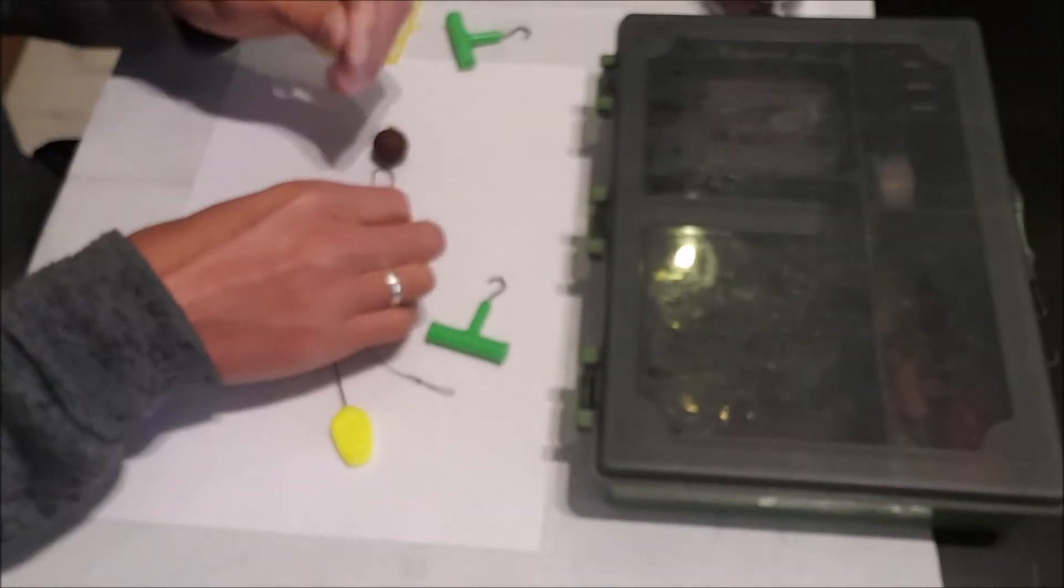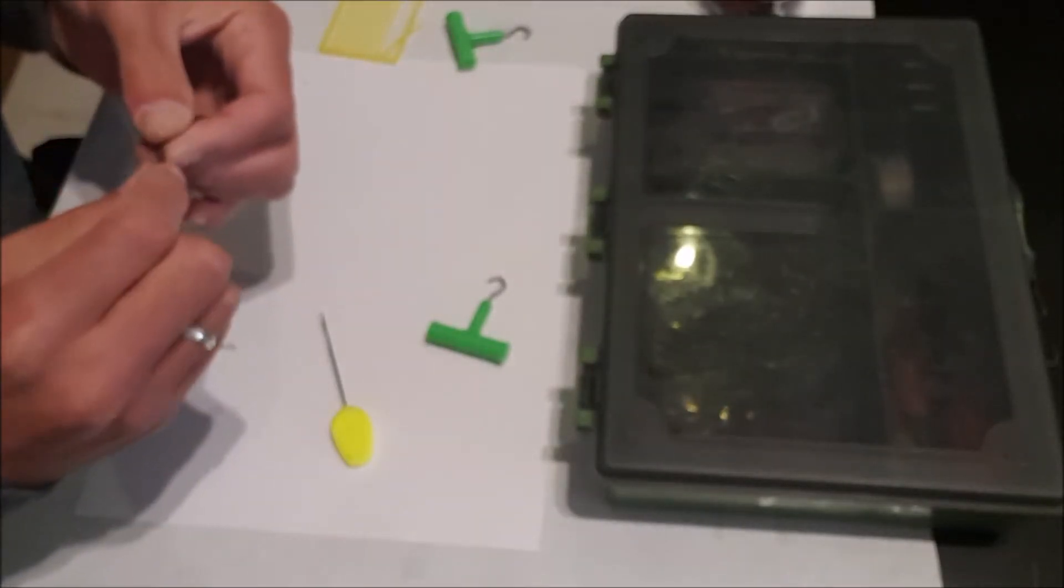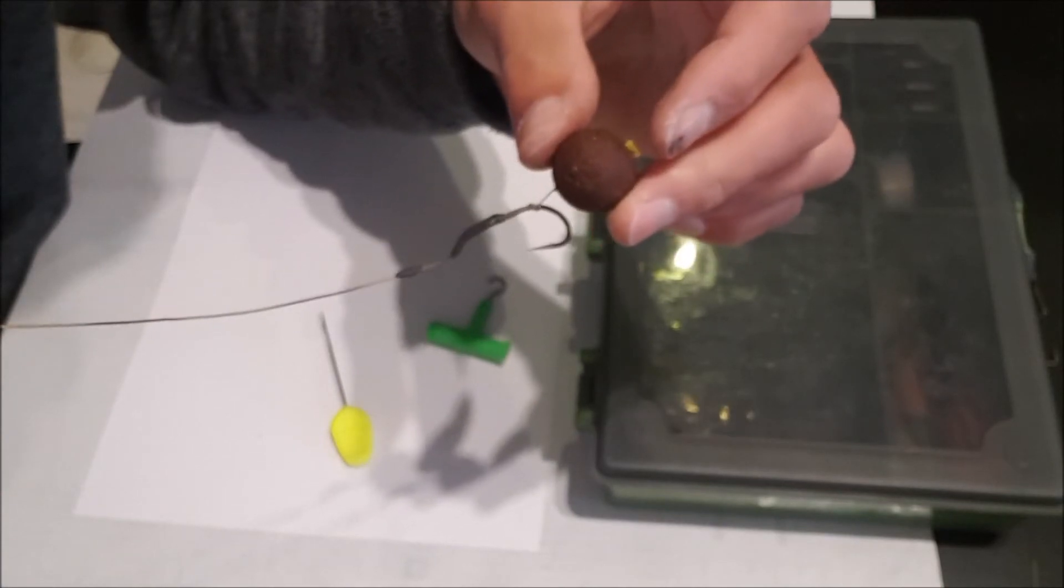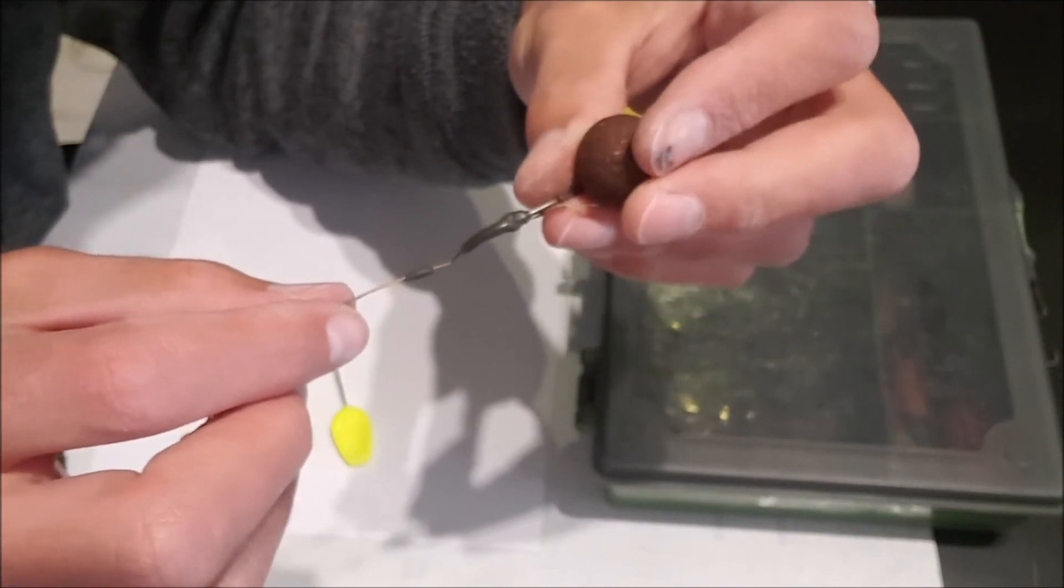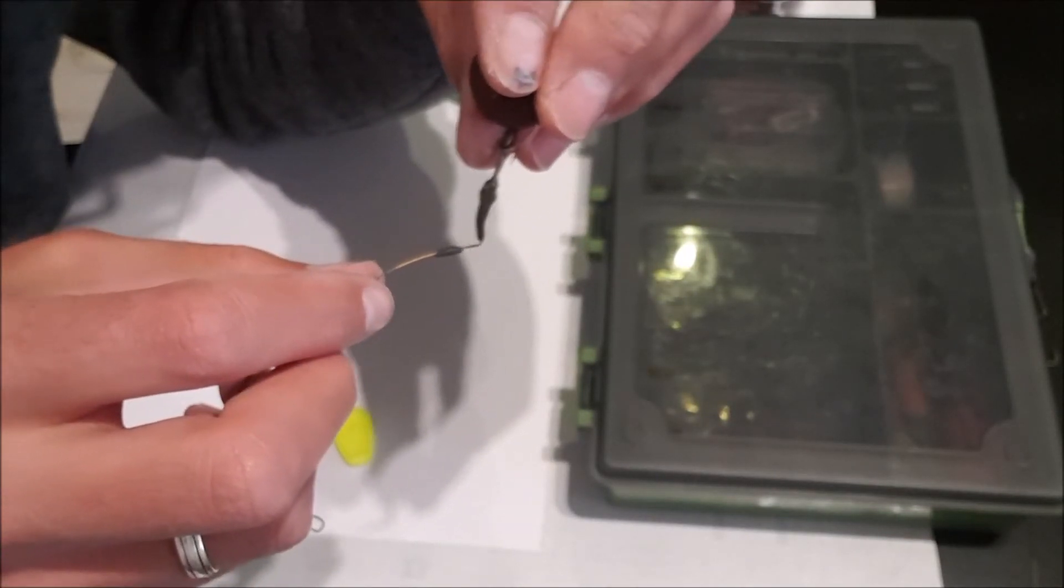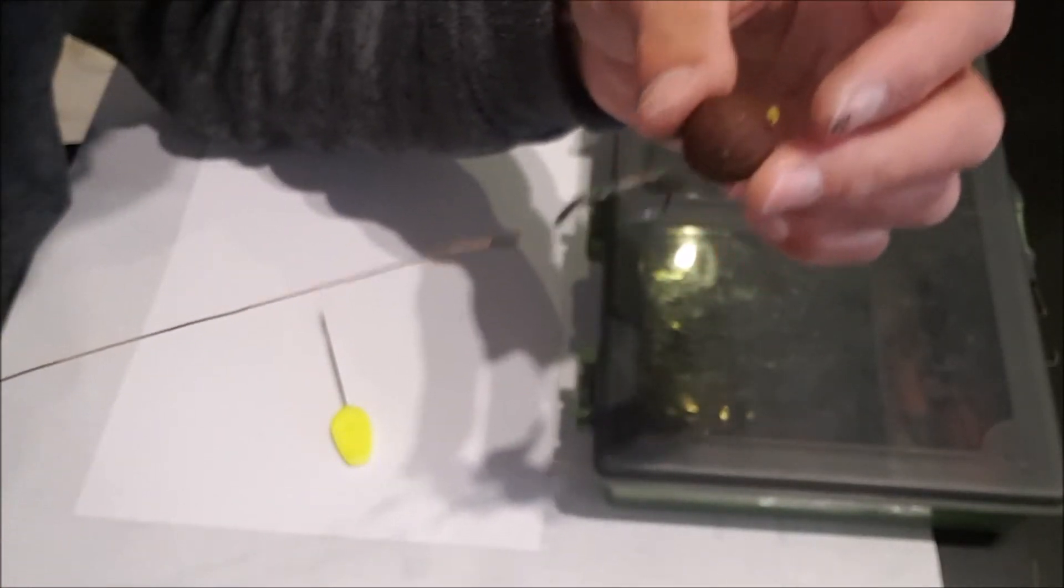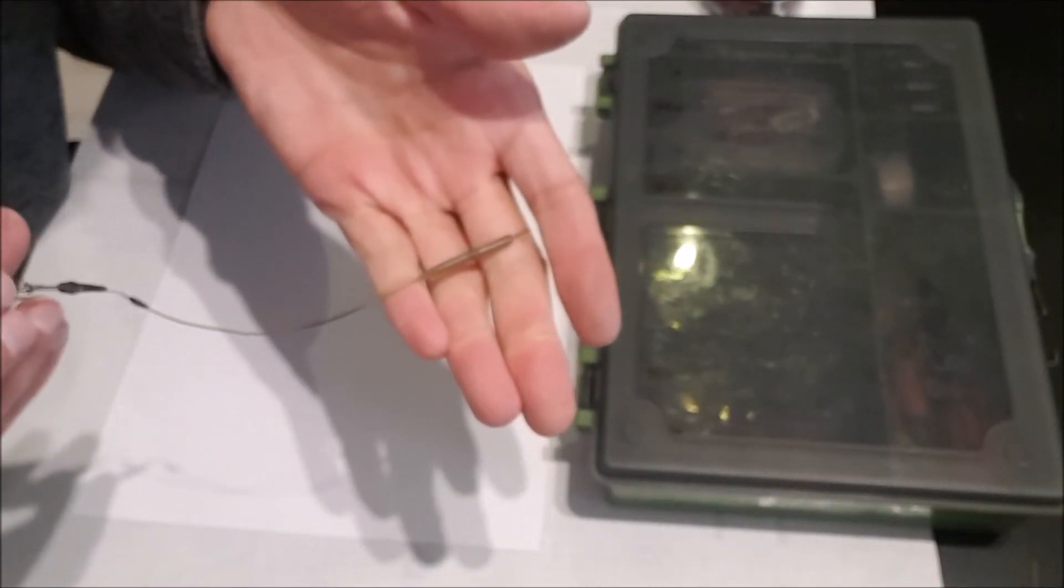And to finish it off as before, if you want a little bit of tungsten putty to pin it down. And there's the finished rig again, where we strip the braid away on the coating just gives us a little bit of a hinge there. Then you can put your anti-tangle sleeve on when you're ready to use a rig, like that. And that clips onto your lead clip system.